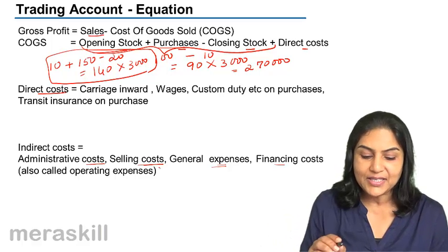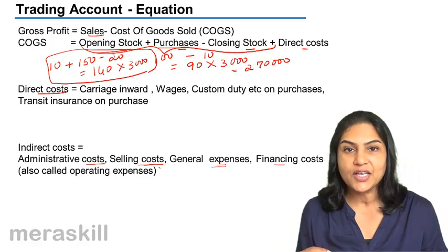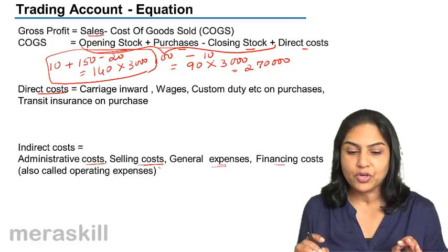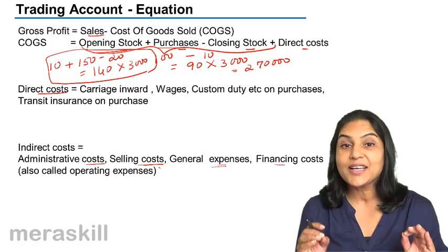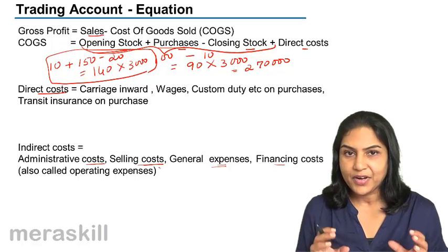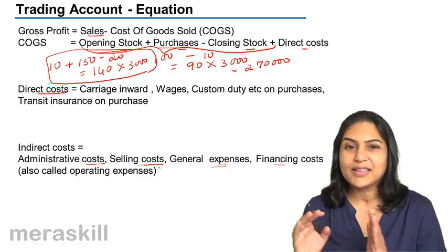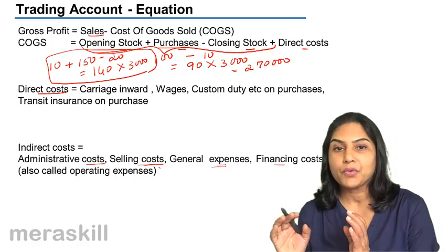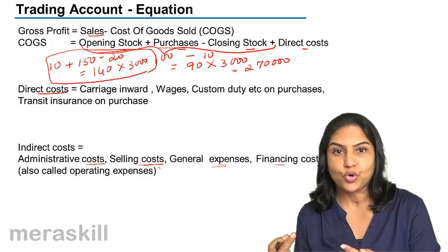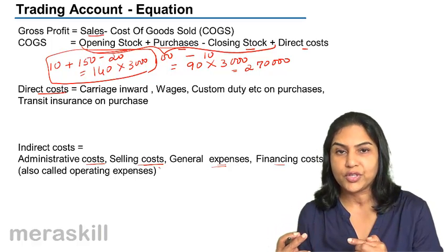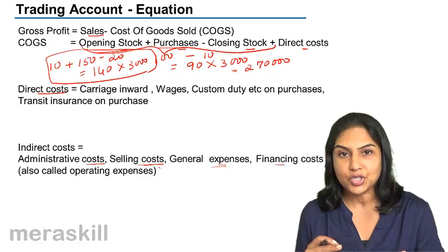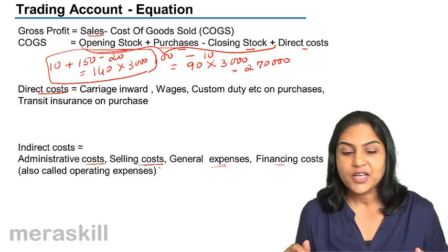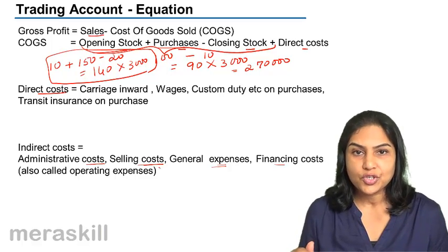Our gross profit minus indirect costs gives us net profit. But when talking about gross profit, all we take is direct cost — sales revenue earned minus the direct cost of the goods sold, which is the purchase cost of the goods sold. Therefore, it includes opening stock and excludes closing stock, plus direct cost, giving us the cost of goods sold.